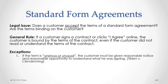The courts have developed some exceptions to that general rule. The first exception comes from the case Tilden v Clendenning, which we'll look at in detail in a moment. Under that case, if a contractual term is considered to be onerous or unusual, the customer has to be given reasonable notice of that onerous or unusual term and also a reasonable opportunity to understand that term and what he was signing. If those requirements are not met, then that onerous or unusual term is invalid.